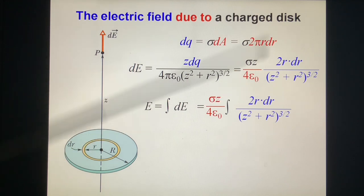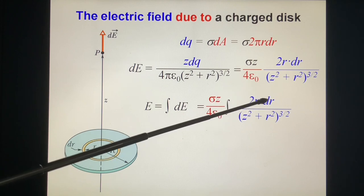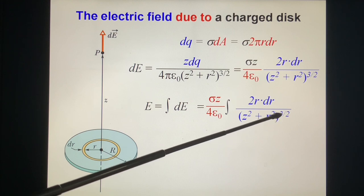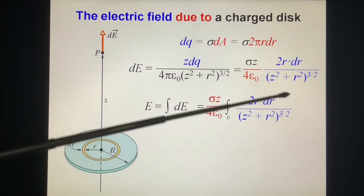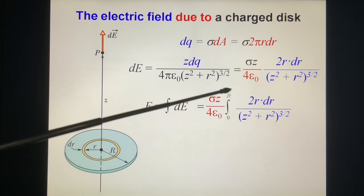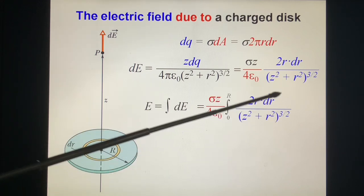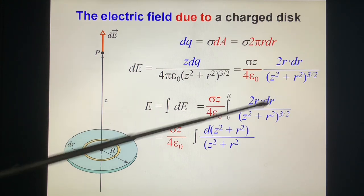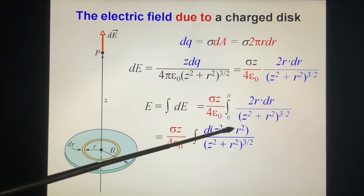This integration is not hard. It's easy. You see 2R dR is equal to d(R²). You have R square. And the radius is from R, it's very small, zero up to capital R. This is a range of R. And we do this integration.